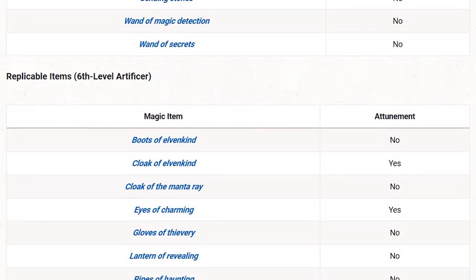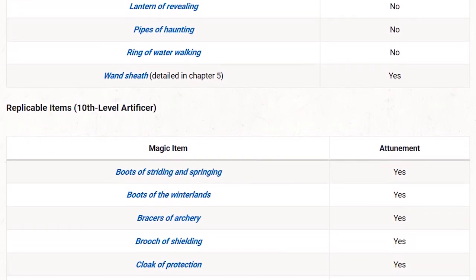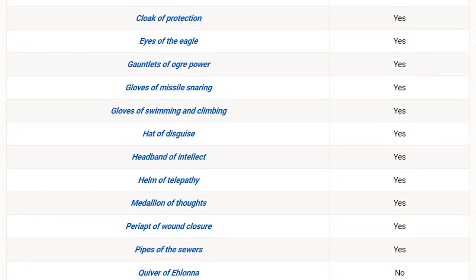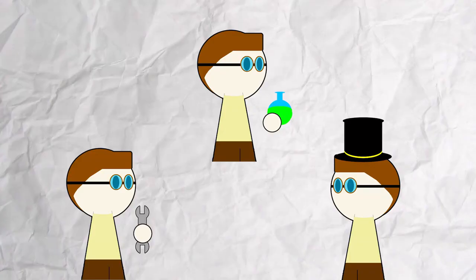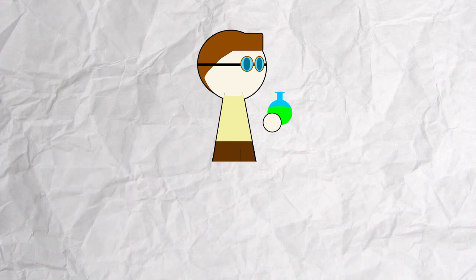And the items that you get at higher level are fucking ridiculous. I don't nearly have enough time to go over them all, so just take my word for it. And then we get to the ridiculousness that is their subclasses. Out of the trio that is available for the artificer, the alchemist is definitely the weirdo of the group.